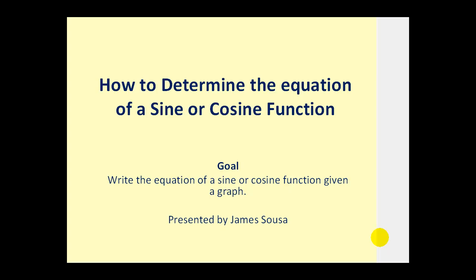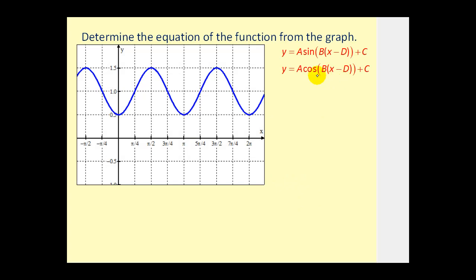Welcome to a video on how to determine the equation of a sine and cosine function. The goal is to write the equation of a sine or cosine function given a graph. We've been working with transformations of these functions, so we should be familiar with the variables a, b, c, and d. One issue is that the equation is not unique — we could use either sine or cosine.